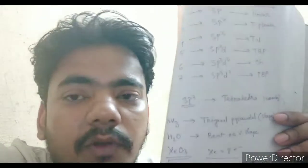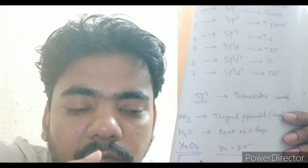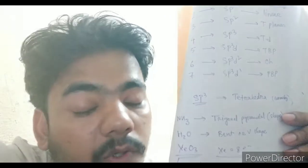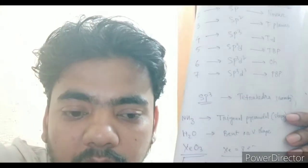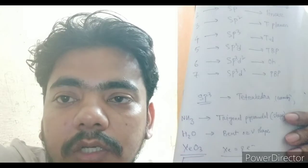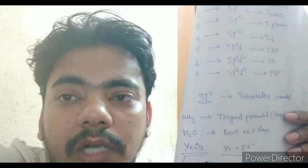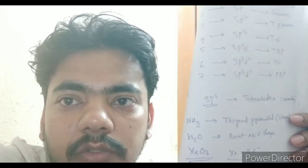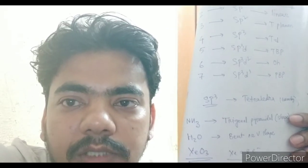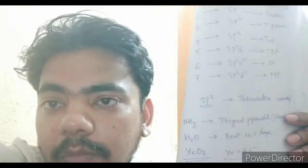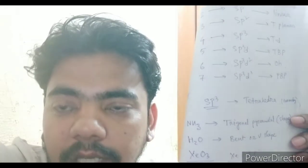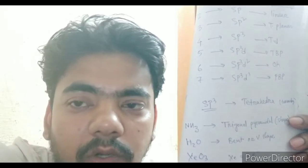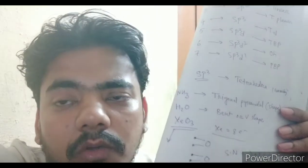Since we are talking about bond angle related concepts, there is a concept called Drago's molecules. You should have a little bit of knowledge about those molecules — they seem like sp3 hybridized but they don't actually have hybridization and their bond angle is always approximately 90 degrees. I have already made a video on that, you can go through it.